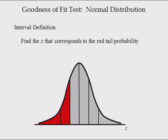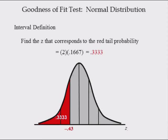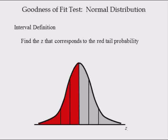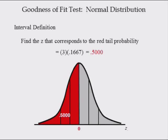Next, find the Z-value that corresponds to the larger red tail probability, which equals 2 — because there are two intervals — times the probability of each interval, 0.1667, or 0.3333. The Z-value that corresponds to this value is in row 0.4 and column 0.03 in the standard normal table. Hence, the Z-value is negative 0.43. Then find the Z-value for the very large red tail probability, which equals 3 times 0.1667, giving 0.5. The Z-value that corresponds to 0.5 is 0.